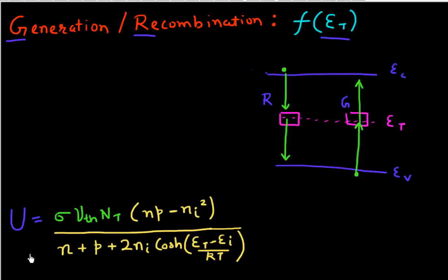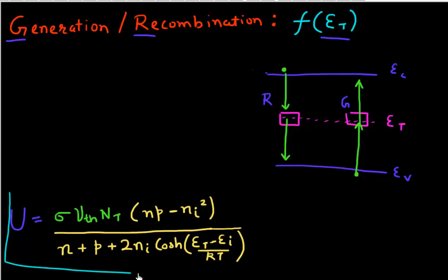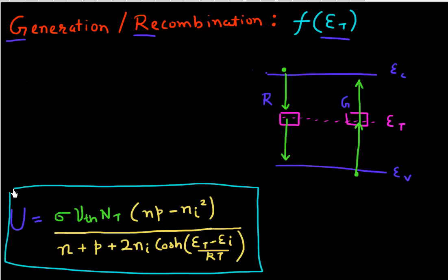I'll start with something I derived in the last video — this horrible-looking formula given by Shockley, Reid, and Hall. I'll start with this and then try to see how the generation and recombination rate depends upon the energy of the trap level. This is a universal formula; it gives me both generation and recombination.